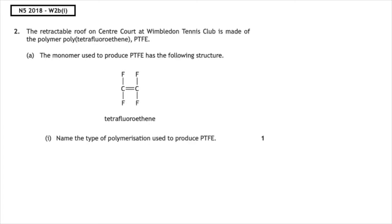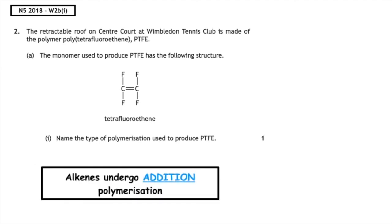This past paper question is from the National 5 2018 written 2B part 1. The retractable roof on Centre Court at Wimbledon Tennis Club is made from the polymer polytetrafluoroethene, PTFE. The monomer used to produce PTFE has the following structure. Name the type of polymerization used to produce PTFE. We can see in the structure a carbon to carbon double bond and alkenes undergo addition polymerization.